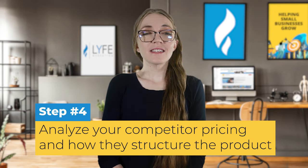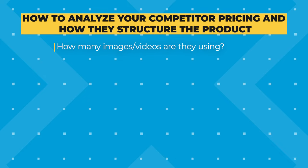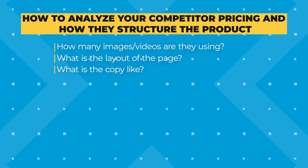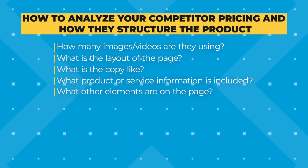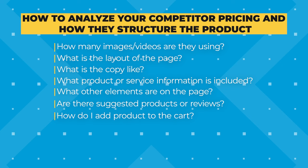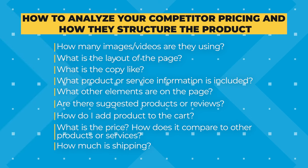Next, you'll analyze your competitor's pricing and how they structure the product. Browse through product pages and pay attention to pricing. Here's what I look for specifically: how many images or videos they're using and the style of those — is it moody, on a white background, how does it feel? What is the layout of the page generally, and where is everything located? What is the copy like — long, short, descriptive, bullet points, or romantic language? What product or service information is included? What other elements are on the page, like email lists or links to blogs? Are there suggested products? Are there reviews? How do I add the product to the cart? What is the price of the product and how does it compare to competitors? How much is shipping?